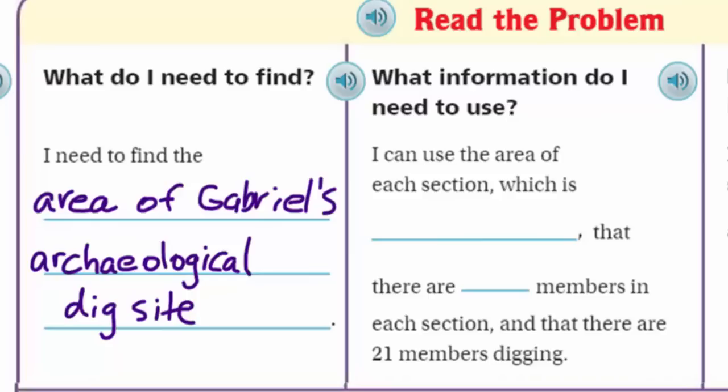Now, what information do I need to use? All right. It says I can use the area of each section, which is, and the dig site each section was, I recall, 15 square feet. That's just an abbreviation for 15 square feet. Now, it says there are so many members in each section. And remember, there's three members in each section.